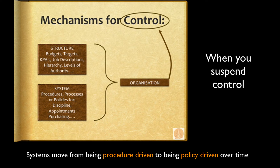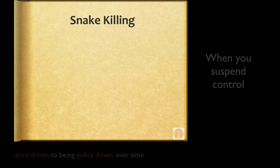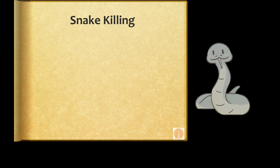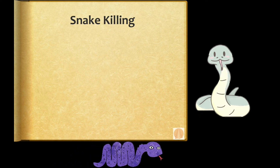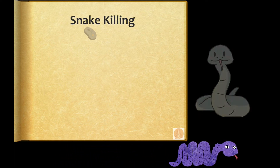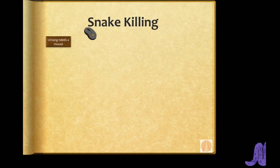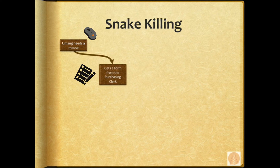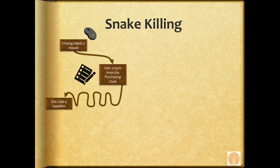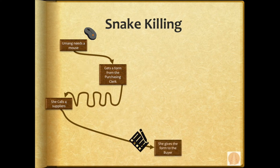Practically, we have a process called snake killing, which is really about the incremental suspension of control and how that affects system. For example, we have a lady in an IT concern — her name is Umang — and she needs a mouse. In order to get this mouse she has to go to the purchasing clerk, get a form, call four suppliers, sign the form, and send it through to the buyer.